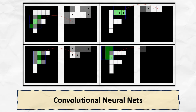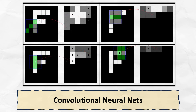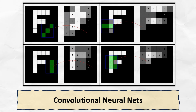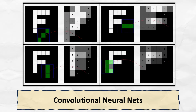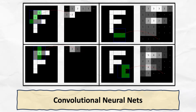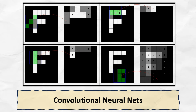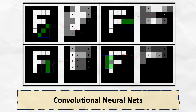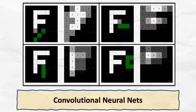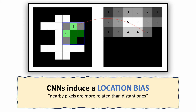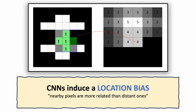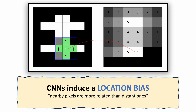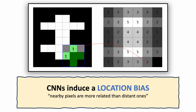Compare that to a more specialized architecture like convolutional neural nets, or CNNs. CNNs train multiple convolutional filters to detect local patterns like edges and textures. CNNs add a location-specific inductive bias by telling the neural network that nearby pixels are more related to recognizing patterns instead of distant ones.